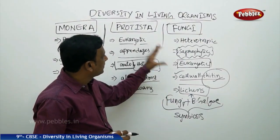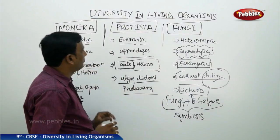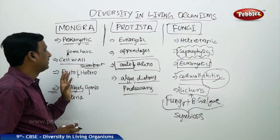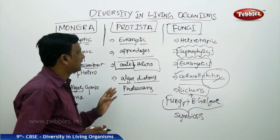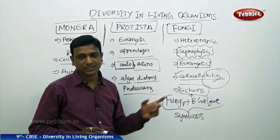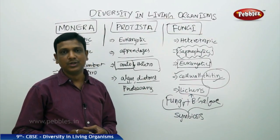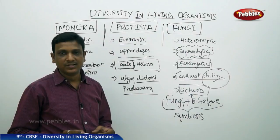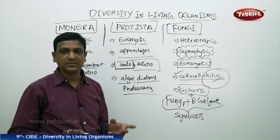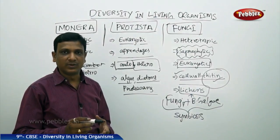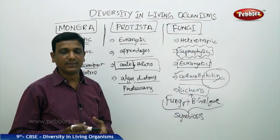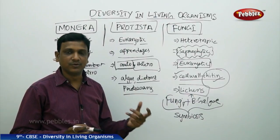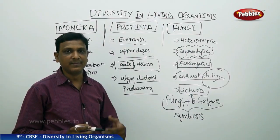This covers the third kingdom — Fungi — completing our discussion of Monera, Protista, and Fungi. The remaining two kingdoms are Plantae and Animalia. We will now go on to learn about Plantae, its subgroups, and the subgroups of Animalia.